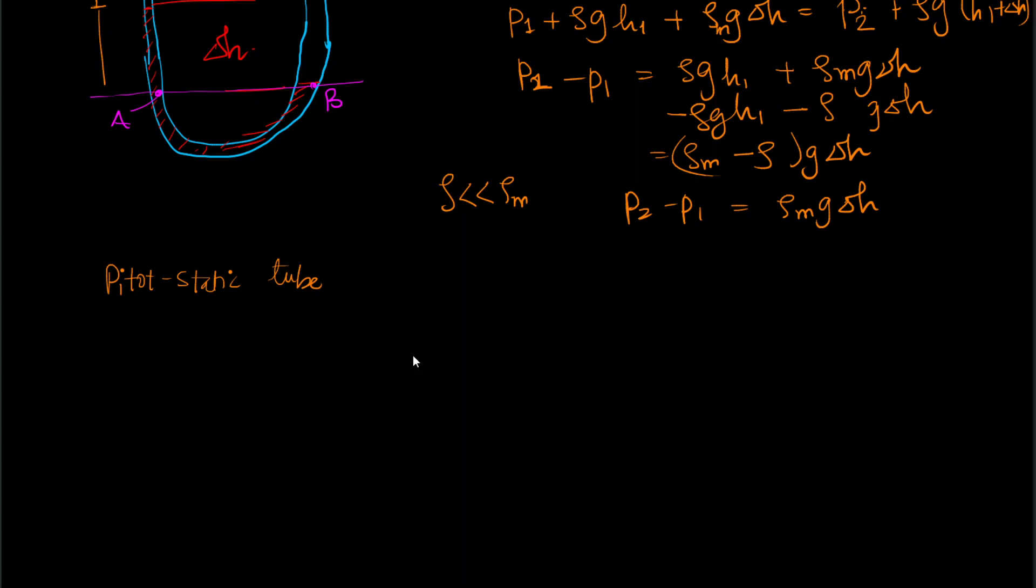This kind of pitostatic tube can be found in aircrafts - both military and civilian aircrafts. It can also be found on Formula One cars. If you look carefully on the nose, there will be a small probe like this sticking out.